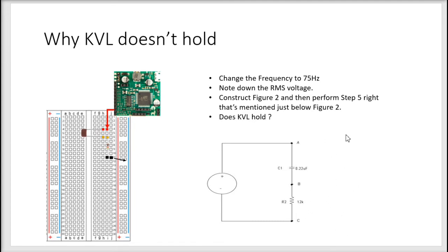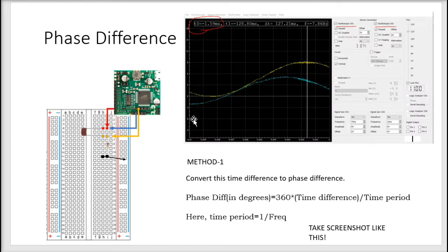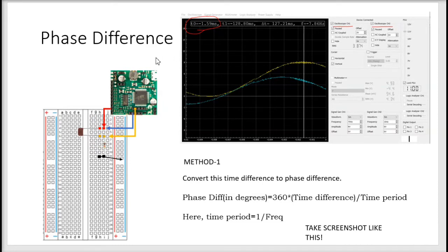The reason KVL doesn't hold in that simple way is because of phase difference. When phase difference is accounted for in the equation, then KVL is justified — but without it, you cannot hold the KVL logic for AC voltage. To measure the phase difference, with the figure two circuit constructed, connect oscilloscope channel 1 AC to one end of the capacitor, and oscilloscope channel 2 AC to the other end of the capacitor. Make sure both oscilloscope channels are checked.